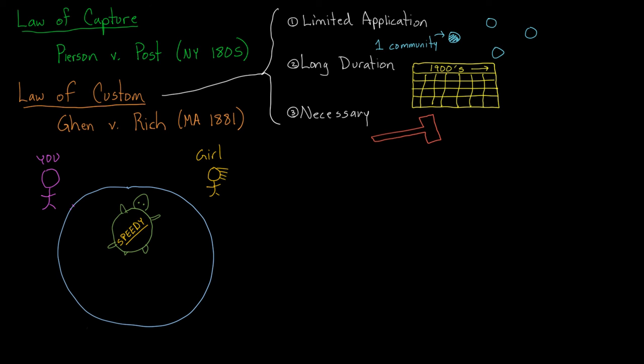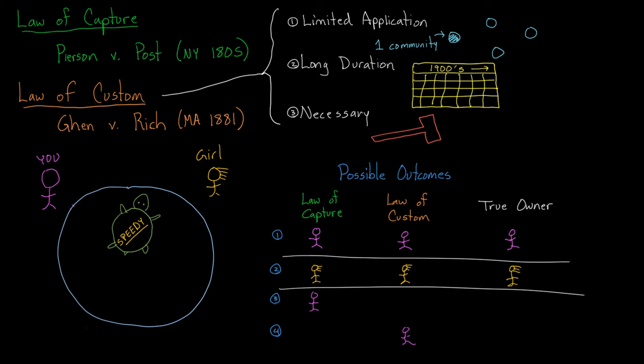If you really think about it, there's four possible outcomes. Either both custom and capture law are on the same side, meaning either you or the girl would win under either law. Or custom and capture law are on opposite sides, meaning that the result would be different depending on which law you follow. And this just depends on the facts of the situation.